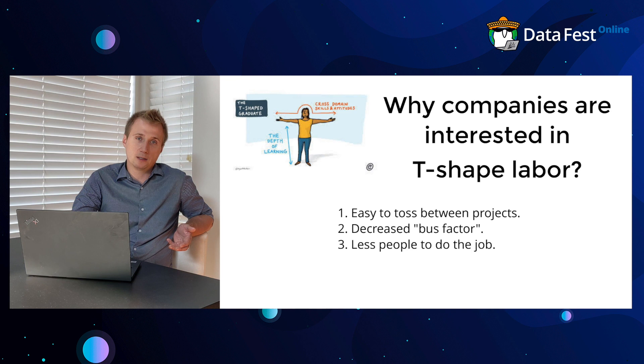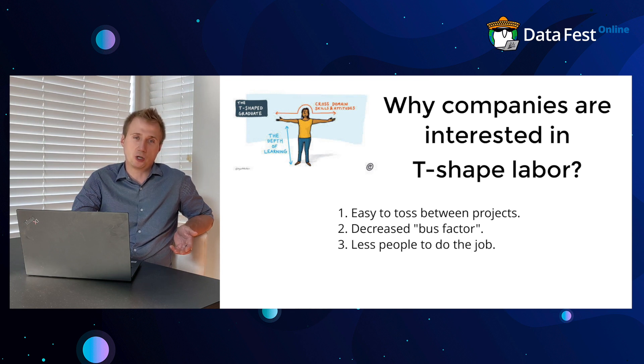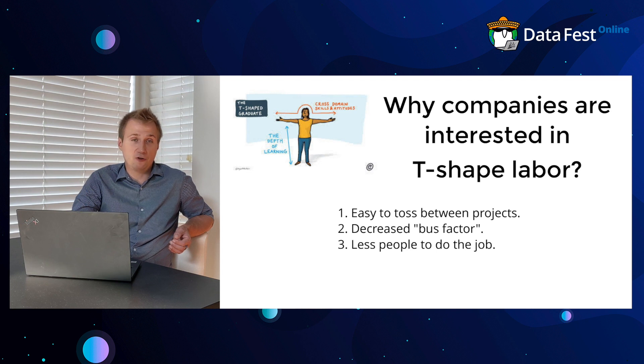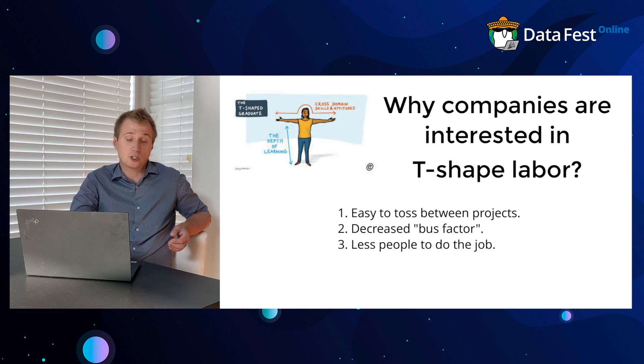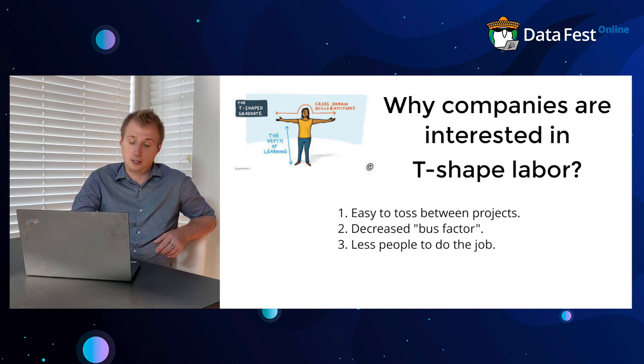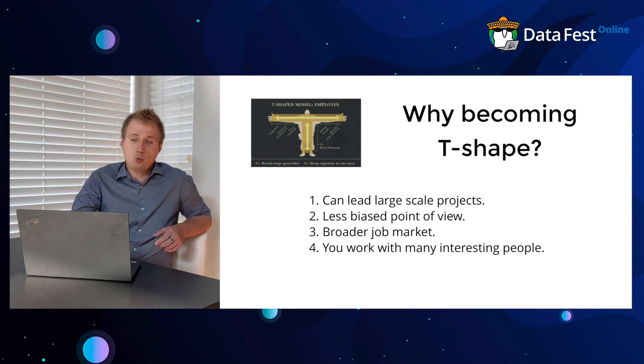Decreased bus factor: if there's a key person, like a machine learning specialist, and no one understands what they're doing, if this person gets hit by a bus or leaves the company, the project will be frozen or even closed. But if different team members have some expertise, they'll be able to pick this up. And of course, if people have different skills, fewer people can do the project successfully, which is more cost efficient.